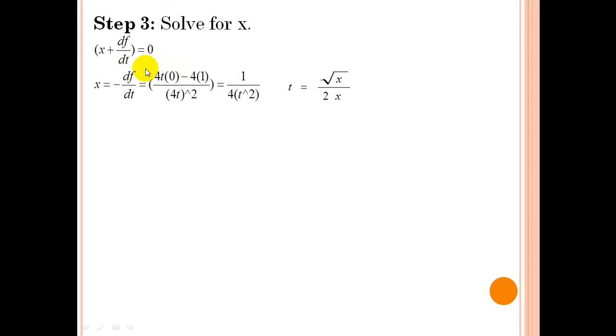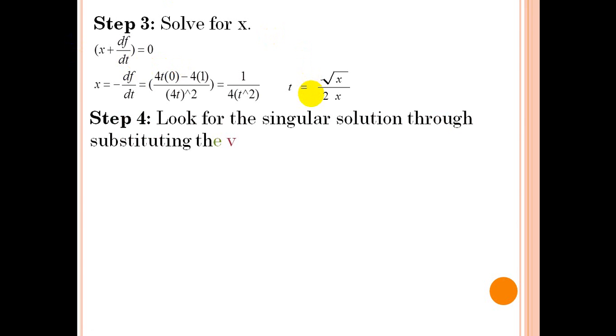we need to express it in terms of t so that we will only be left with x and y terms for us to solve the particular solution. So in step 4, we need to look for the singular solution through substituting the value of t to the general solution.